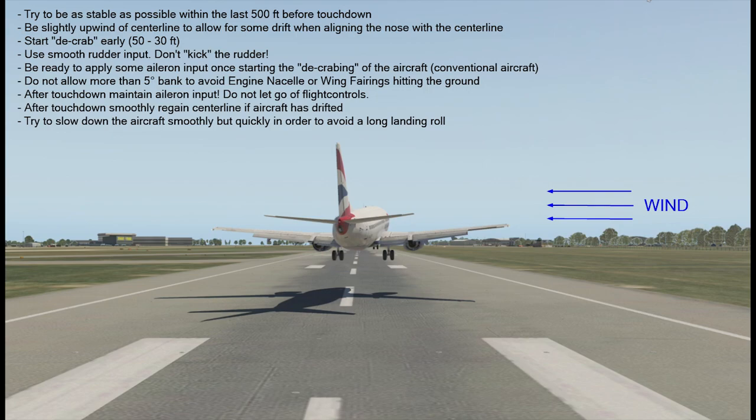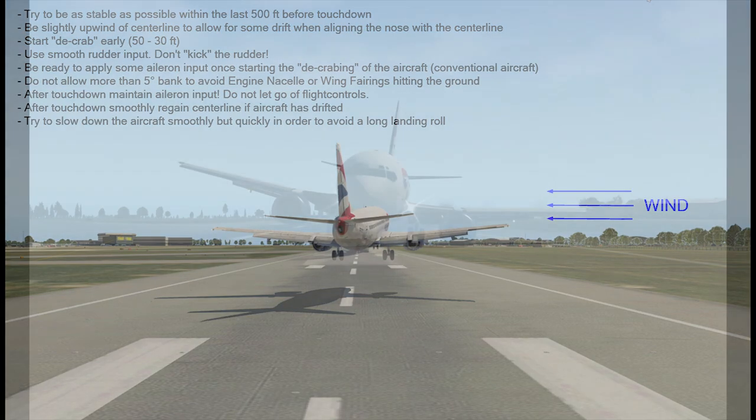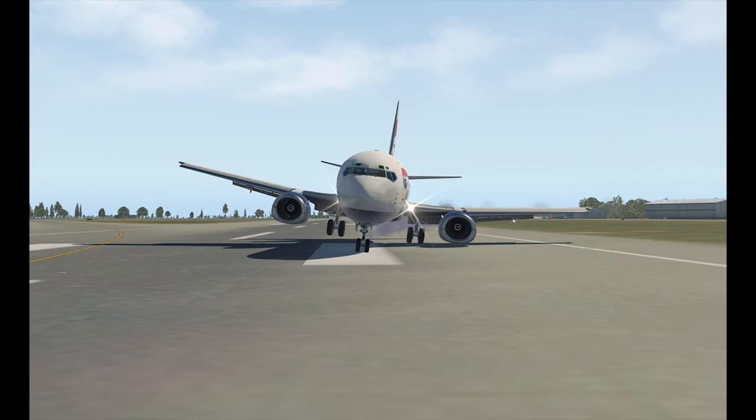Fast rudder movements cause a roll moment, which in conventional aircraft can be very difficult to control simultaneously. Be ready to address any bank movement with aileron input. Depending on the amount of crosswind, you may need a little bank to control drift, but try to avoid bank angles greater than 5 degrees — some aircraft could have the engine nacelle touch the ground. Going towards 10 degrees of bank during flare or touchdown risks the wing fairings hitting the ground.